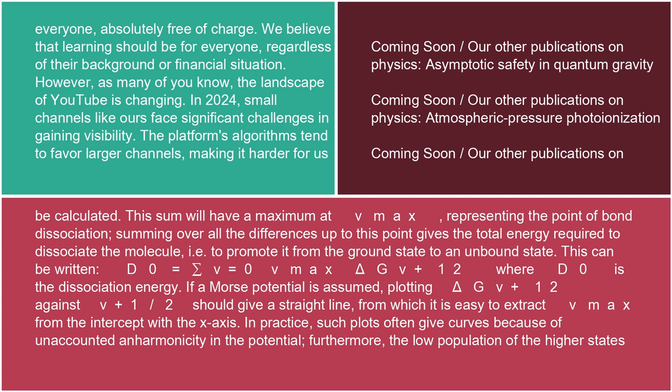This sum will have a maximum at v_max, representing the point of bond dissociation. Summing over all the differences up to this point gives the total energy required to dissociate the molecule, i.e. to promote it from the ground state to an unbound state. This can be written,